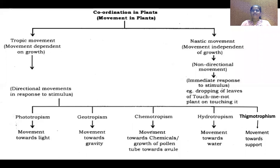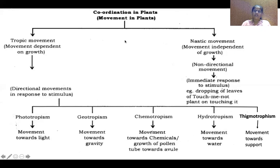Good morning children. Today is the third class of control and coordination. So far we have seen control and coordination in animals, done by the nervous system and chemical coordination — that is, secretion of hormones by endocrine glands. Nerve coordination in animals or human beings by the nervous system was nothing to do with growth.